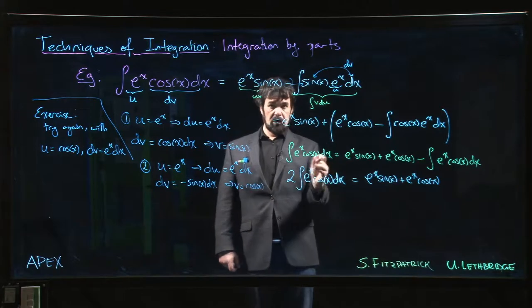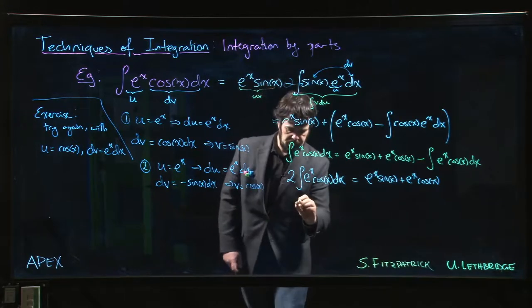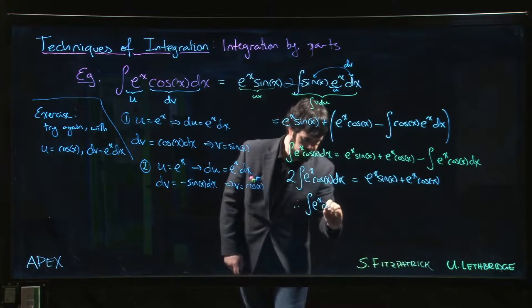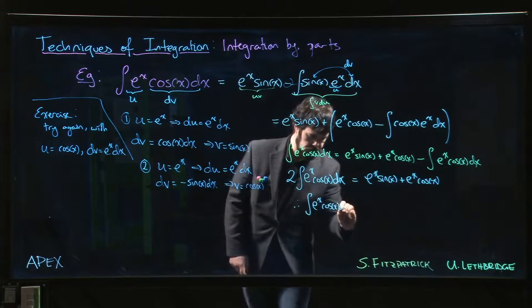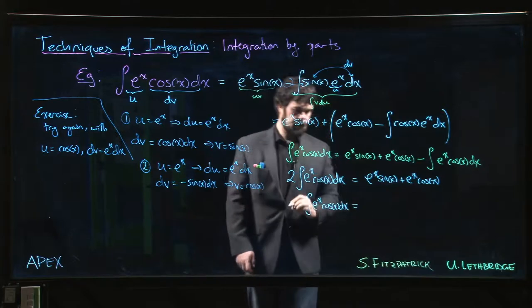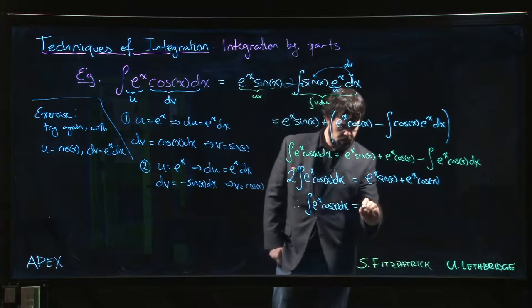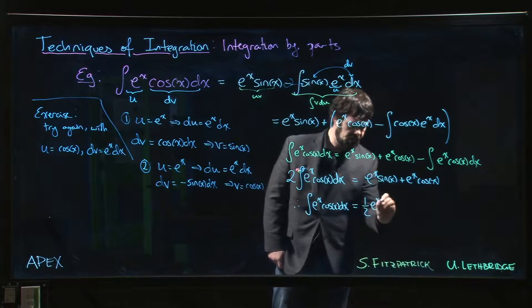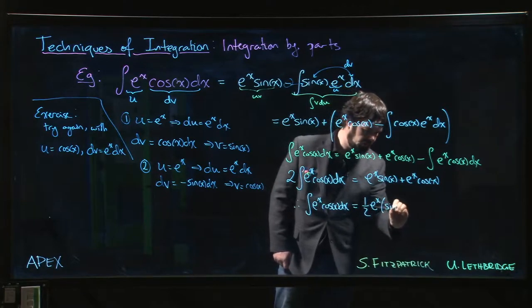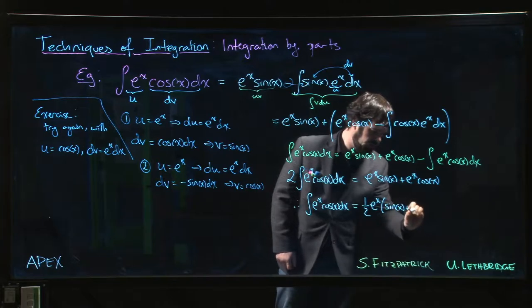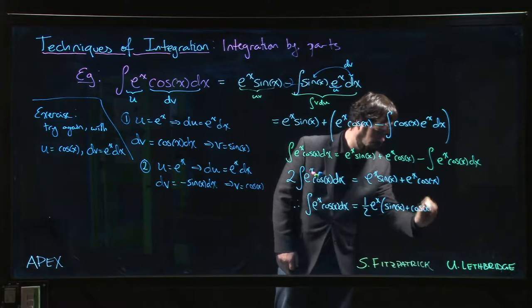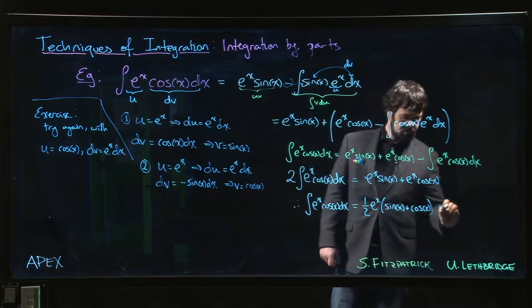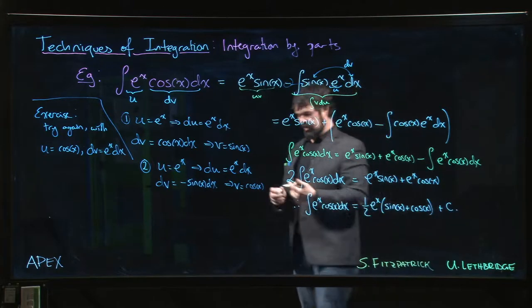Well, this is the thing we want. All we need to get it is divide by two. Okay, so we get one half e to the x. If you want, we could factor out the e to the x and write that as sin x plus cos x.